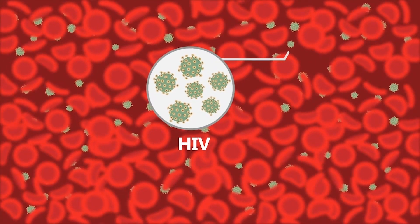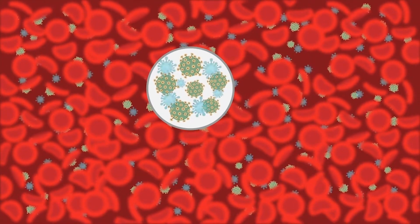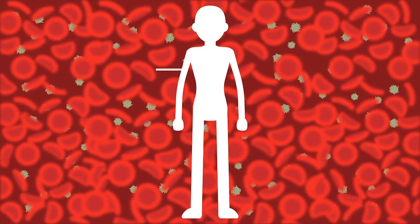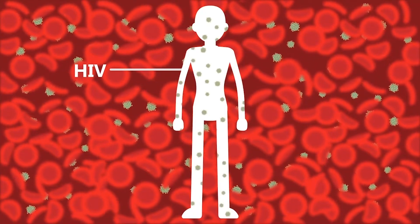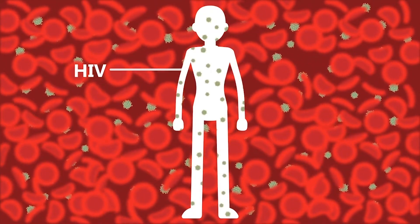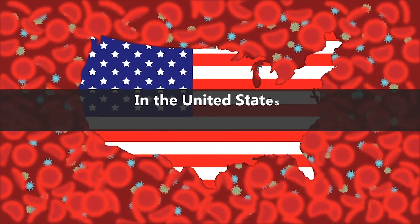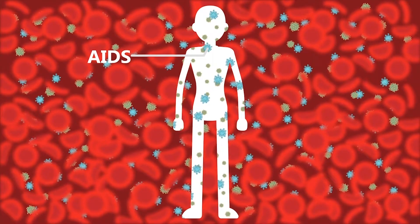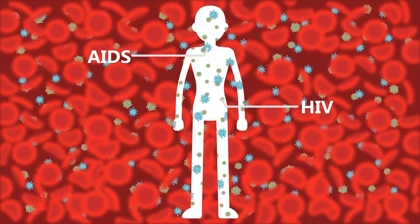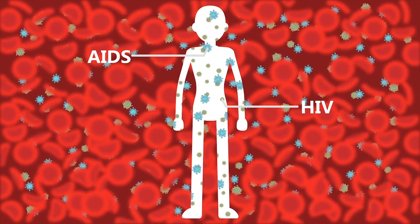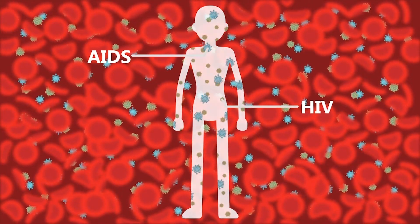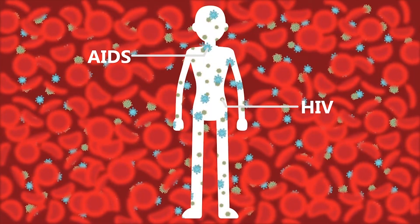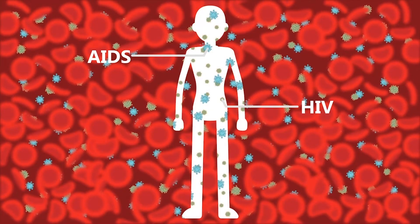HIV means human immunodeficiency virus. HIV is the virus that causes AIDS. When a person has HIV, it means the virus is in his or her body. In the United States, over one million people are living with HIV. When a person has AIDS, it means HIV has made it so the body cannot fight off infections. Since AIDS is an advanced form of an HIV infection, everyone who has AIDS also has HIV.